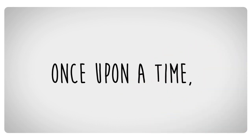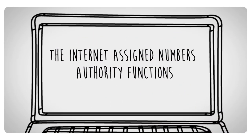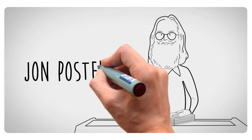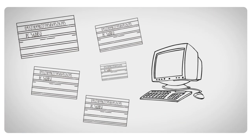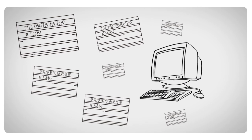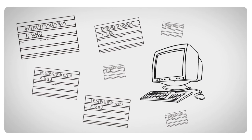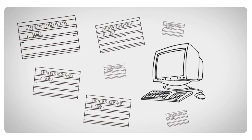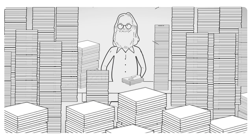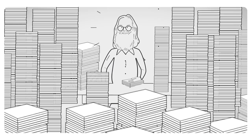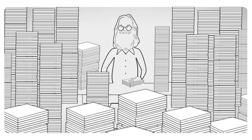Once upon a time, the Internet assigned numbers authority functions were all performed by one person, John Postel. He had a notebook and index cards on which he kept the names of large computers and the numbers associated with them. Almost 20 years later, the Internet has grown tremendously and the IANA functions can no longer be managed by just one person.